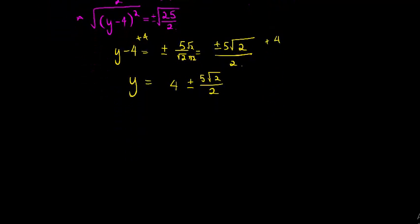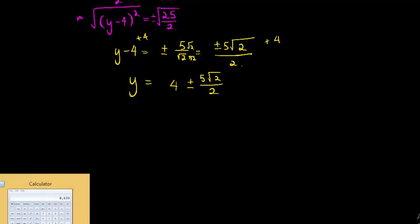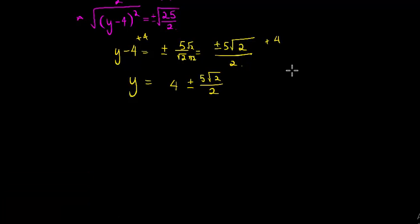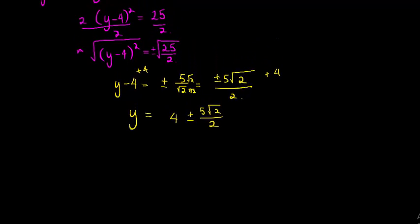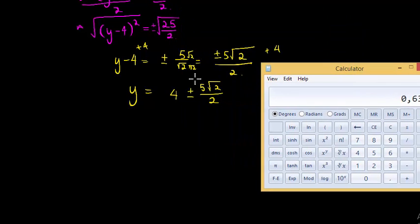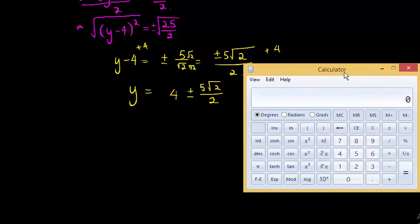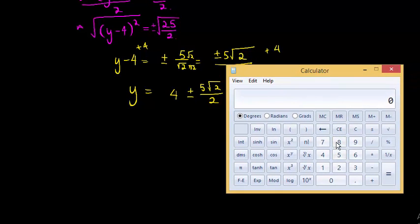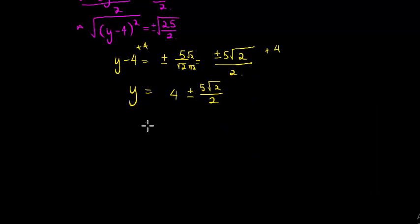I'll use my calculator to find an answer there. We're going to have to use our calculator because we might not know whether this is still positive or negative. Let's try 4 minus 5 times √2 over 2 equals 0.464. They ask us in the question to calculate to three decimal places.